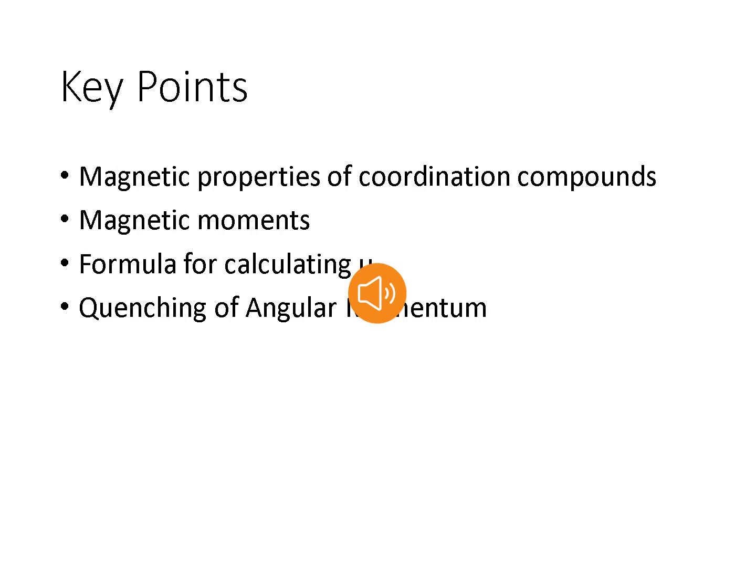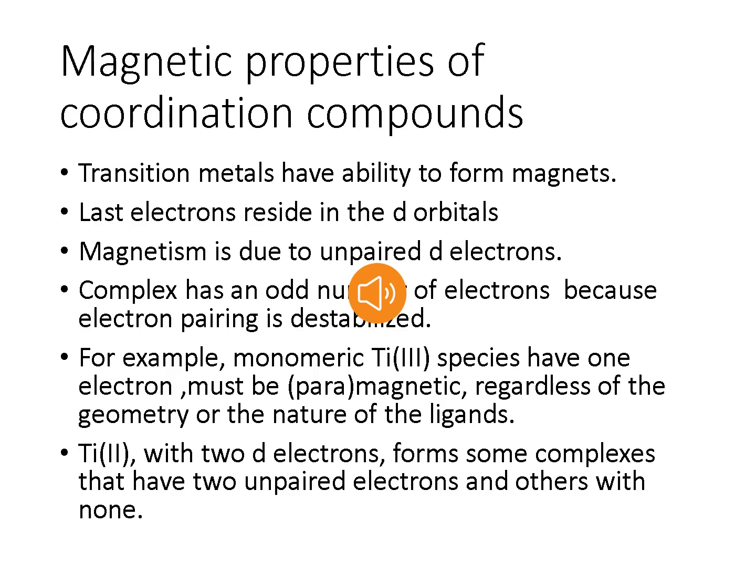Magnetic properties of coordination compounds: transition metals have the ability to form magnets. That depends upon the geometry and the valence shell electrons, which reside in the d orbitals of transition metals. The magnetism is due to their unpaired d electrons. Complexes that have an odd number of electrons — for example, monomeric titanium with one electron — are paramagnetic regardless of the geometry or the nature of the ligand.